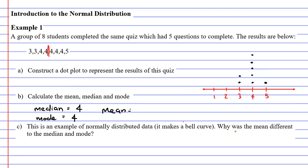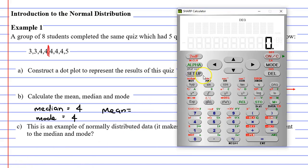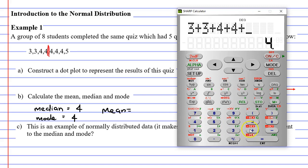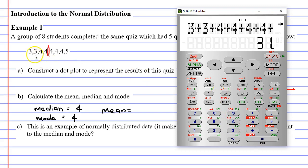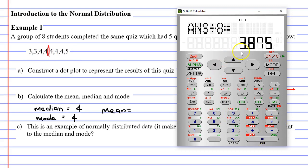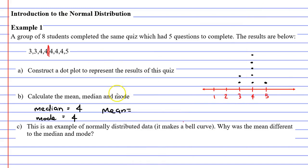Now let's find the mean. Bringing up our calculator, we first add our scores: 3 plus 3, plus 4, plus 4, plus 4, plus 4, plus 4, plus 4, and finally add the 5, and we get 31. Now we have 8 scores here, so we need to divide this by 8, giving us 3.875. I'm going to round that to 3.9.